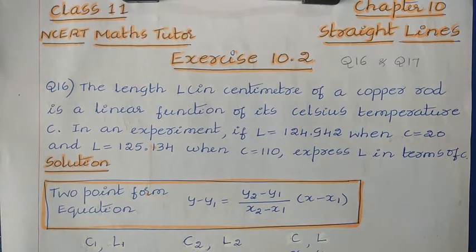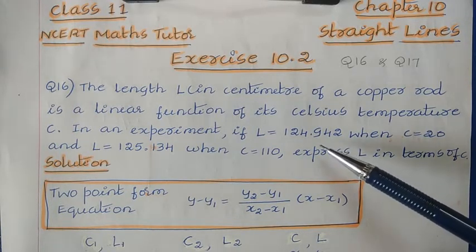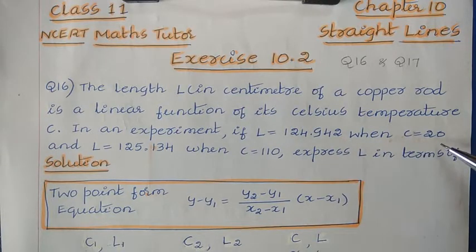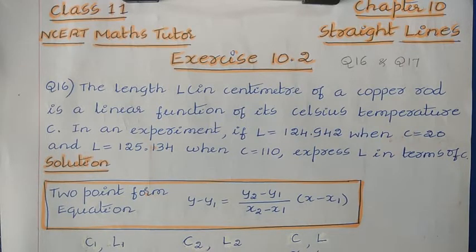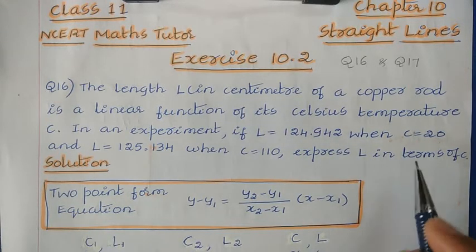Question number 16: The length l in centimeters of a copper rod is a linear function of its Celsius temperature c. In an experiment, if l is equal to 124.942 when c is equal to 20, and l is equal to 125.134 when c is equal to 110, express l in terms of c.